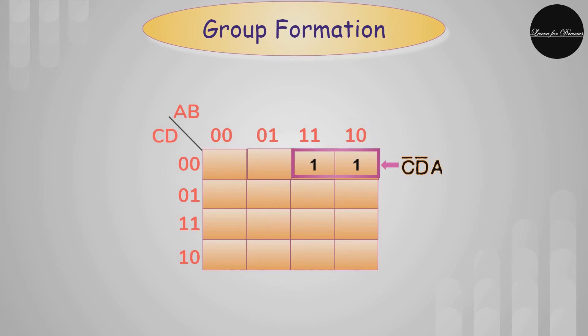Now we will see the four ones group or you can say quad. Here the logic is same. The C will be neglected and B is also neglected. And the final equation of this group is DA.